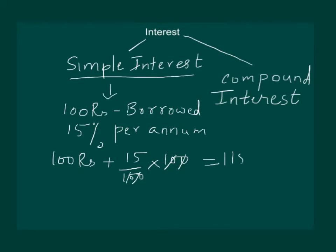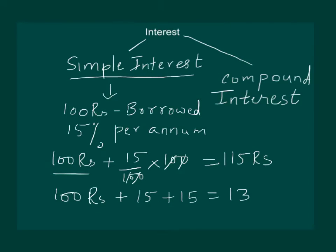That is 115 rupees. Next year, if you are still not able to pay, you will have to pay 100 rupees plus 15% interest for the first year and 15% interest for the second year — that means 130 rupees. The principal value that was borrowed stays the same at 100 rupees, and we calculate 15% interest on 100 each year, so the interest remains 15 rupees per year.